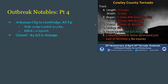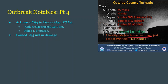The last notable tornado is the Arkansas City to Cambridge, Kansas F4. As seen in the NWS photo, it was a wedge that tracked 40.5 kilometers, or 25 miles. This tornado killed one person and injured zero. It caused around five million dollars in damage in 1991 dollars, which adjusted for inflation is around 25 million. It had a width of three-fourths of a mile, or 1.2 kilometers wide.